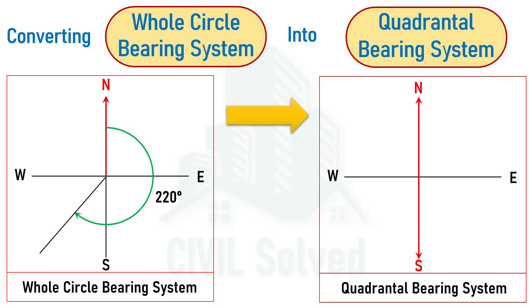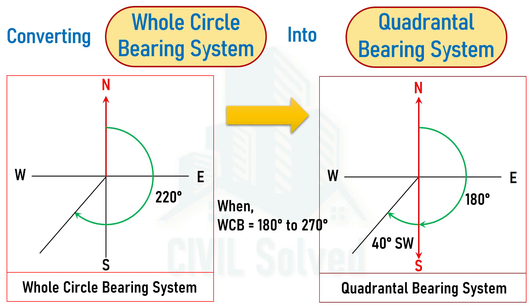If we have a line with a bearing of 220° in WCB, again this line is near to south, so the angle is measured from south. The angle from north to south is 180° and the total angle up to the line is 220°, so the remaining angle is 40°. The line lies in the southwest quadrant, so SW is written. The generalized formula for WCB from 180° to 270° is: QB = WCB − 180°, written with SW.